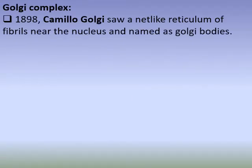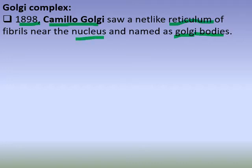This video is called 'Cell: The Unit of Life' - Golgi Complex. In 1898, Camilo Golgi discovered this structure, which is called Golgi Bodies. This is the Rough Endoplasmic Reticulum, this is the nucleus. The Golgi Complex is also called Golgi Bodies, and it is a dry structure.